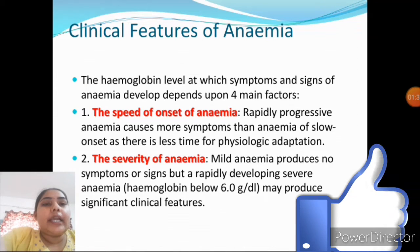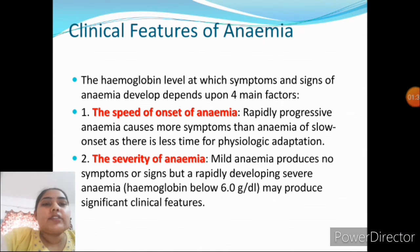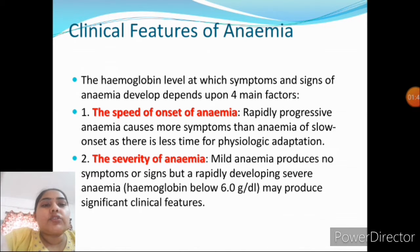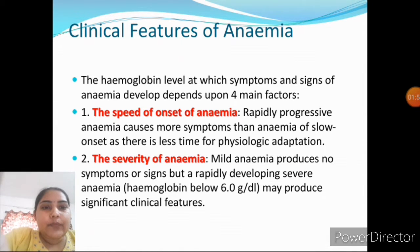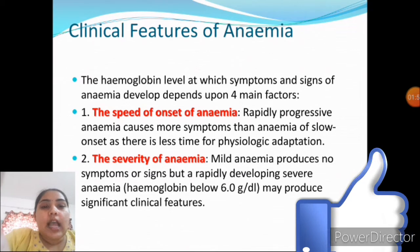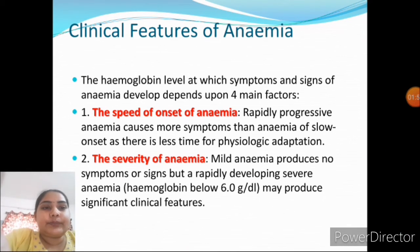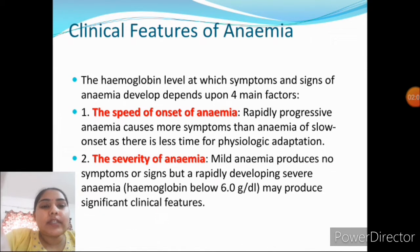Clinical features of anemia: the hemoglobin level at which symptoms and signs of anemia develop depend upon four main factors. First is the speed of onset — rapidly progressive anemia causes more symptoms than anemia of slow onset, as there is less time for physiologic adaptation.